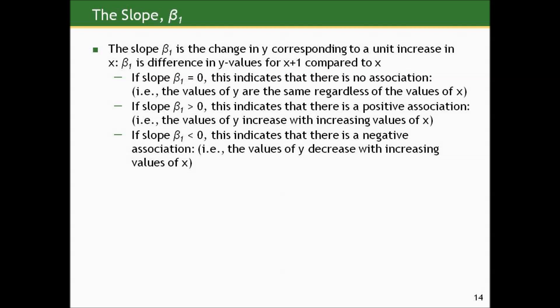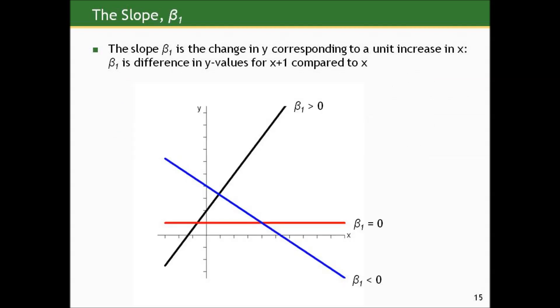If the slope is zero, it indicates that there is no association between y and x. The values of y are the same regardless of x. If the slope is positive, it indicates a positive association; the values of y increase with increasing values of x. If the slope is negative, it indicates a negative association; the values of y decrease with increasing values of x. Here's a schematic showing examples of three different lines: one with a positive slope, one with a slope of zero, and a line with a negative slope.